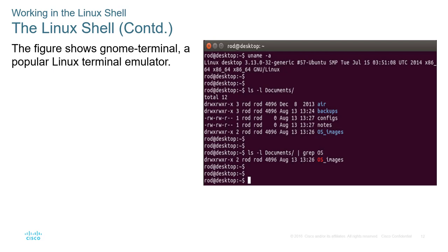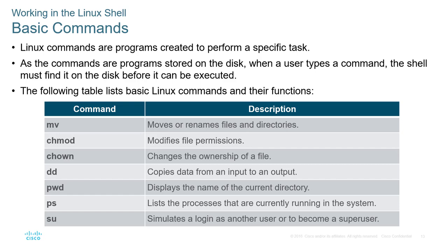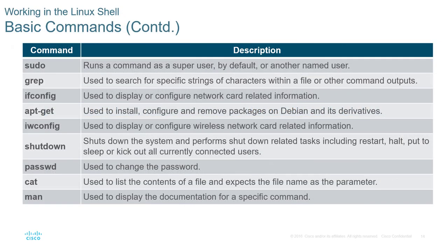Here is an example of a Ubuntu terminal — the GNOME terminal emulator. At the command terminal you have basic commands: mv or move, chmod to modify permissions, chown for file ownership, dd to copy data from input to output, pwd for present working directory, ps for processes, su to log in as another user, and sudo to execute as a super user. Grep is for searching, and ifconfig is similar to ipconfig in Windows.